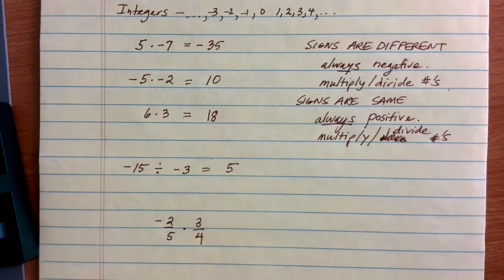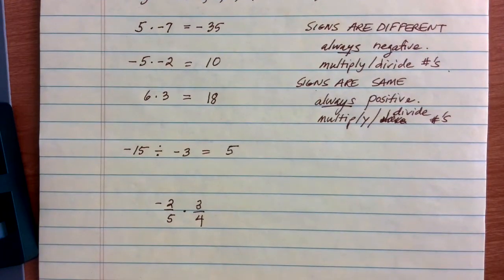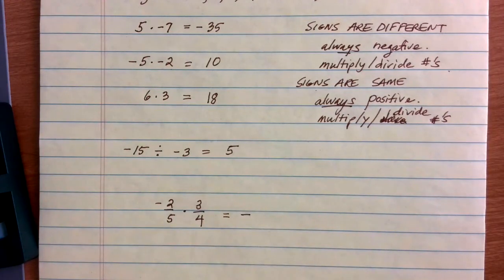Well, this is a multiplication of fractions problem, but I have positive and negative rules that need to be followed to determine the sign. Here, I have two different signs, right? This one is negative and this one is positive. Signs are different means that the solution to my problem is going to be negative.